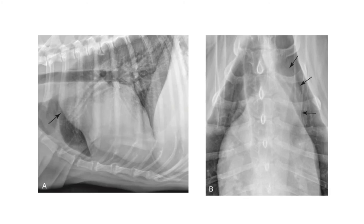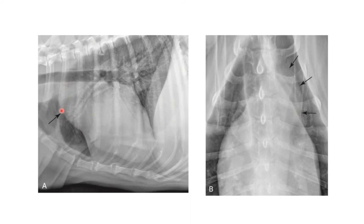Looking at two radiographs of a dog with aortic stenosis — a right lateral and DV view — in the lateral radiograph there's a bulge cranially and dorsally representing an enlarged aorta. On the DV radiograph, there's a bulge between 12 and 1 o'clock representing an enlarged aorta. This combination of a bulge on the cranial dorsal aspect and between 12 and 1 o'clock is typical of a patient with aortic stenosis.